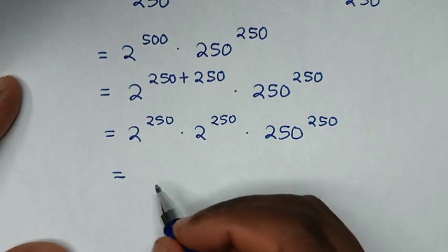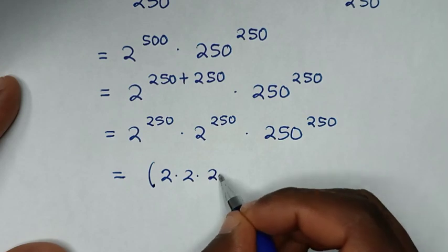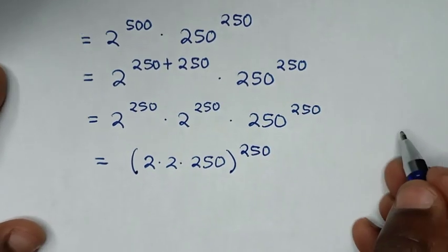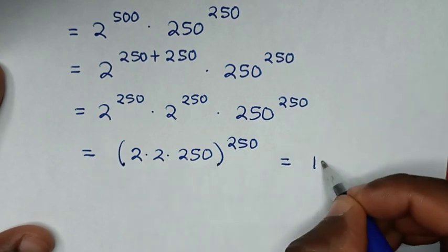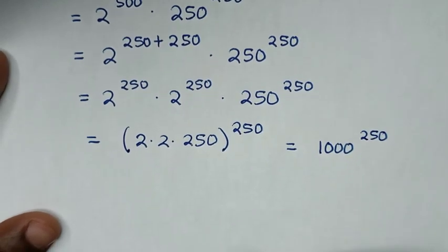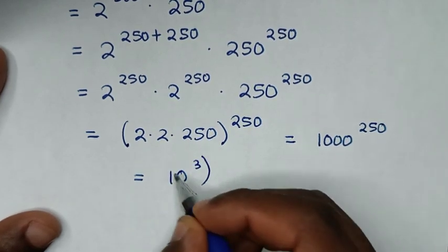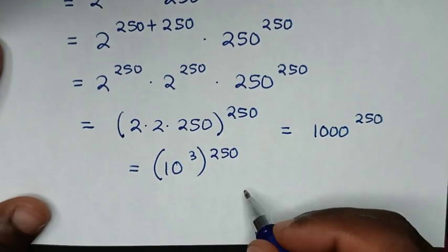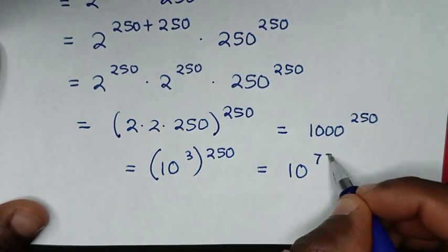It will be equal to 2 times 250 power of 250 — multiplying the bases: 2 times 2 is 4, and 4 times 250 is 1,000 — power of 250. Then 1,000 is the same as 10 power of 3, bracket, power of 250. So it will be equal to 10 power of 3 times 250, which is 750.